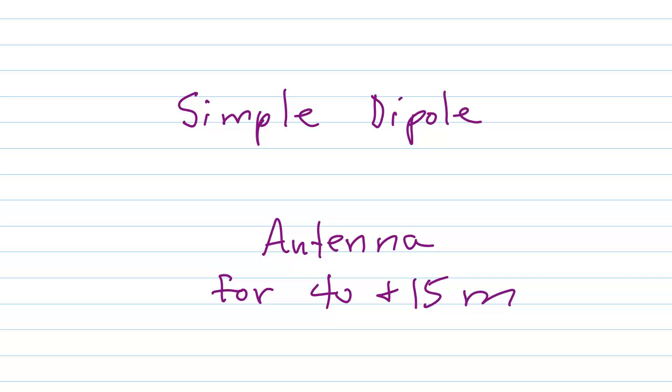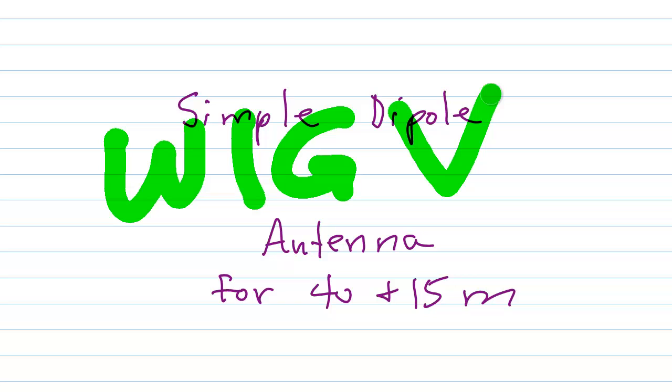Stan Jibalisco here, proprietor and operator of amateur radio station W1GV, Whiskey One Good Vibrations, with a little presentation about a simple dipole antenna for 40 and 15 meters, a two-band dipole.